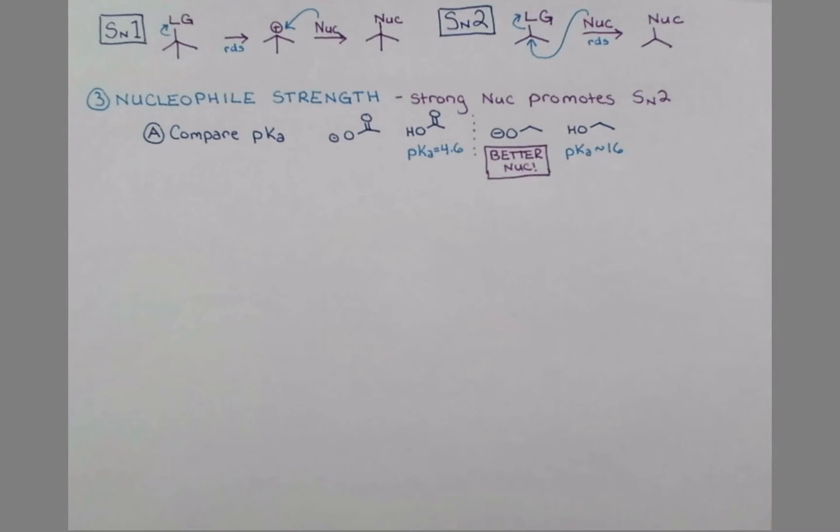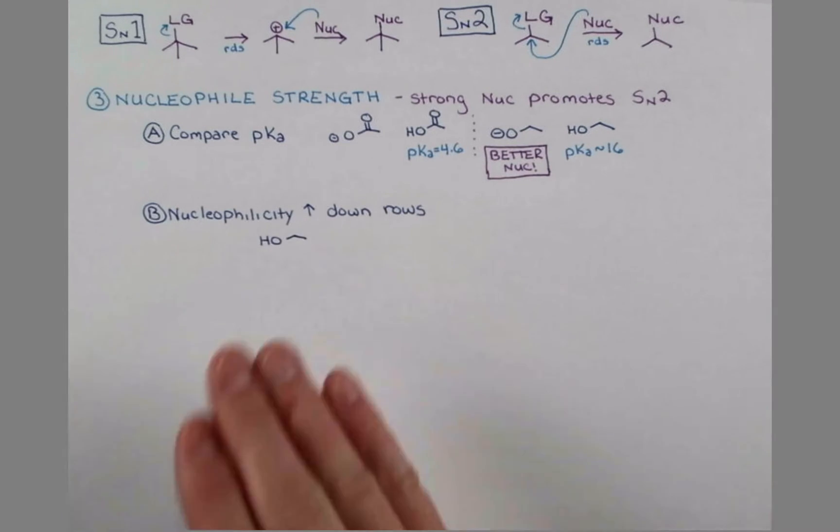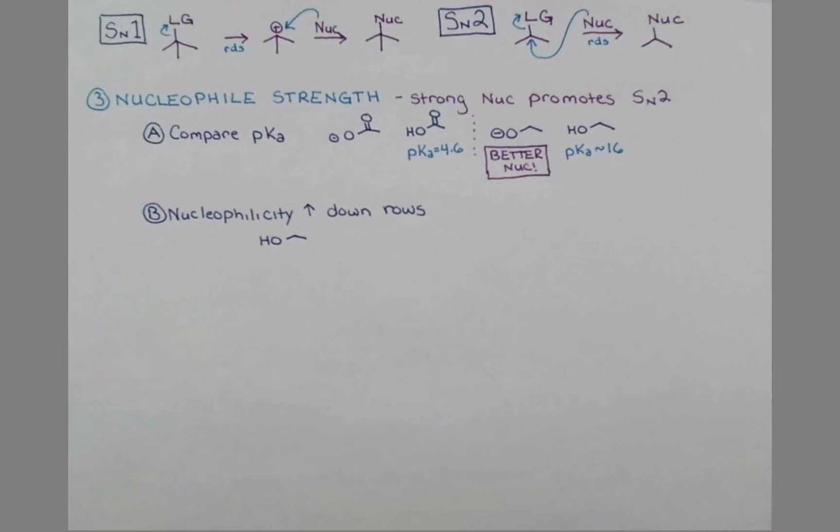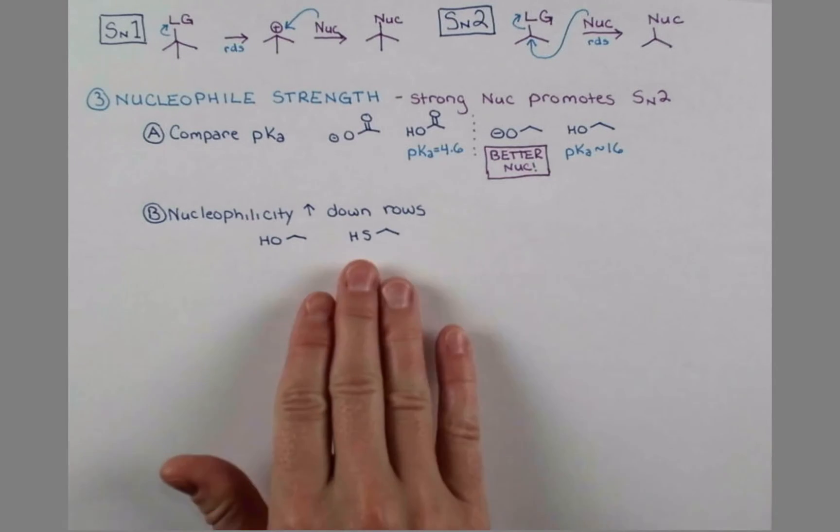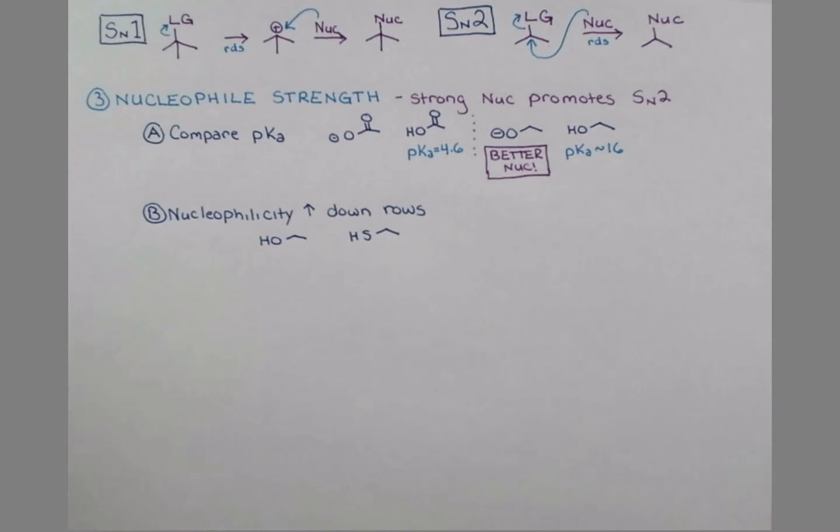Another trend is that nucleophilicity increases as we move down a row on the periodic table. Let's use ethanol again, and let's compare it to an analogous compound using the element just below it on the periodic table. This is ethanethiol, and it is our better nucleophile in this case. This is a general trend. Larger elements tend to be better nucleophiles.